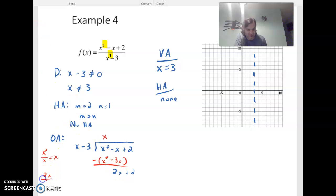So 2x divided by x will give me 2. So that quotient part here is 2. Multiply back: 2 times x minus 3 will be 2x minus 6.